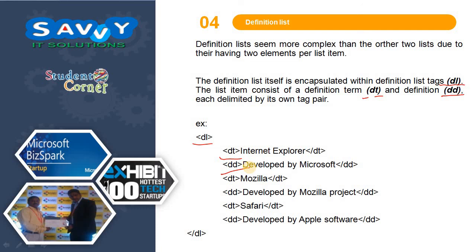To recollect: lists are classified into three types — ordered list, unordered list, and definition list. Thank you.